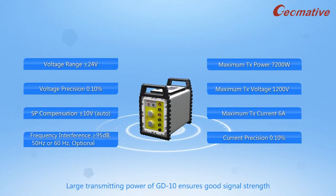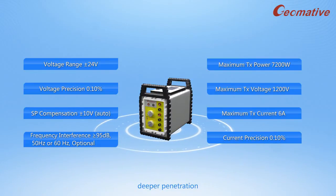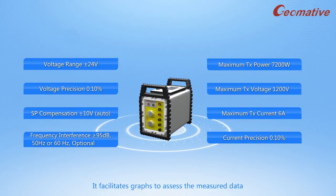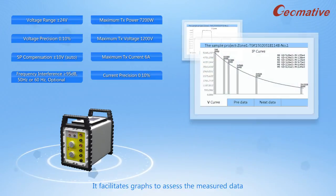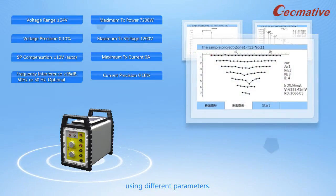The large transmitting power of GD-10 ensures good signal strength, deeper penetration, reduced noise, and good precision in weak signals or deep investigation. It facilitates graphs to access measured data using different parameters.